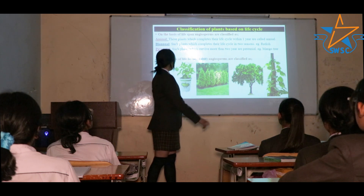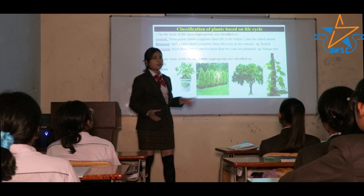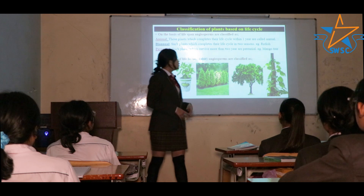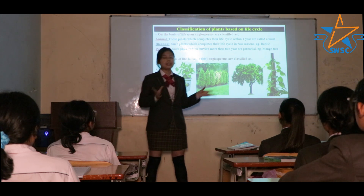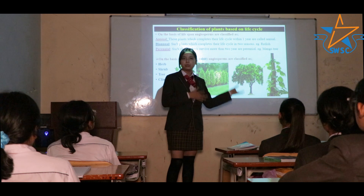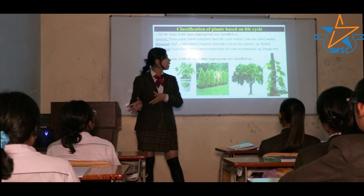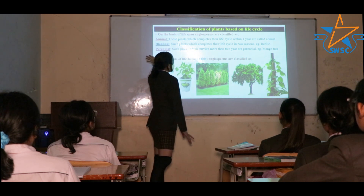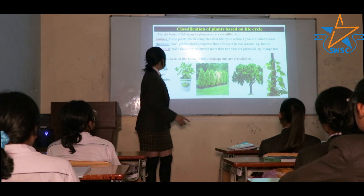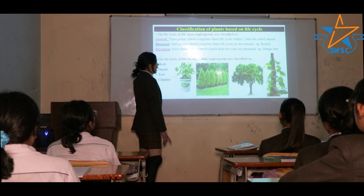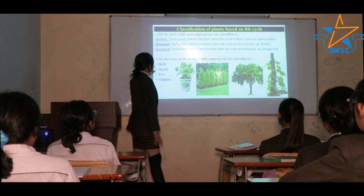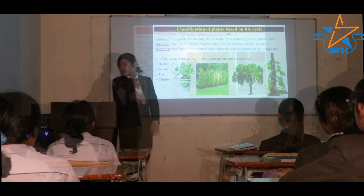Annual plants are those which accomplish their life cycle within one year. Biennial plants accomplish their life cycle within two seasons. Perennial plants survive for more than one year. On the basis of life forms, angiosperms are classified as herb, shrub, tree, and climber.